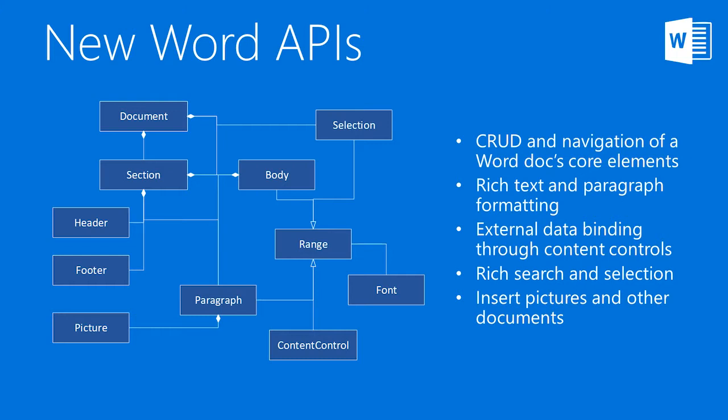A selection is also an important object and represents either a continuous range in a document or simply the current insertion point. The selection is treated as a range within Word. On this first cycle of the API, we are providing enough methods to: A, navigate through the document to core elements like paragraphs and content controls; B, enable rich text and full paragraph formatting and alignments; C, enable data binding through full access to content control functionality. We also enable scenarios like search and selection — you can search through the document and return an array of ranges. We also support insertion of pictures with a strongly-typed object, something that in the previous API was only supported by writing Office Open XML.